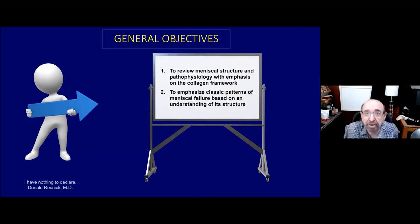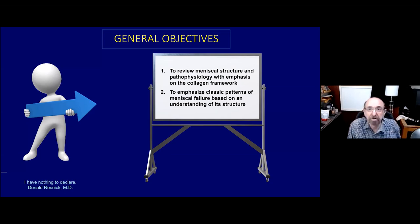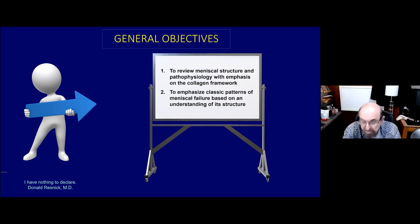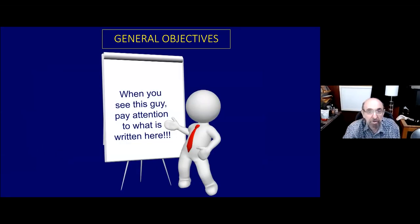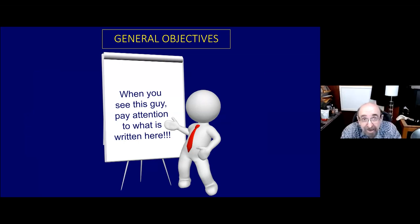There are two particular objectives for this lecture. Number one, to review meniscal structure and pathophysiology with emphasis on the collagen framework found within the meniscus. And then, knowing that framework, we're going to look at classic patterns of meniscal failure, of which there are three. I'll try to explain why they look as they do on the MR images. You're going to see a visual cue marker maybe four or five times during the lecture at the bottom left of your screen - pay attention to what's written on it.